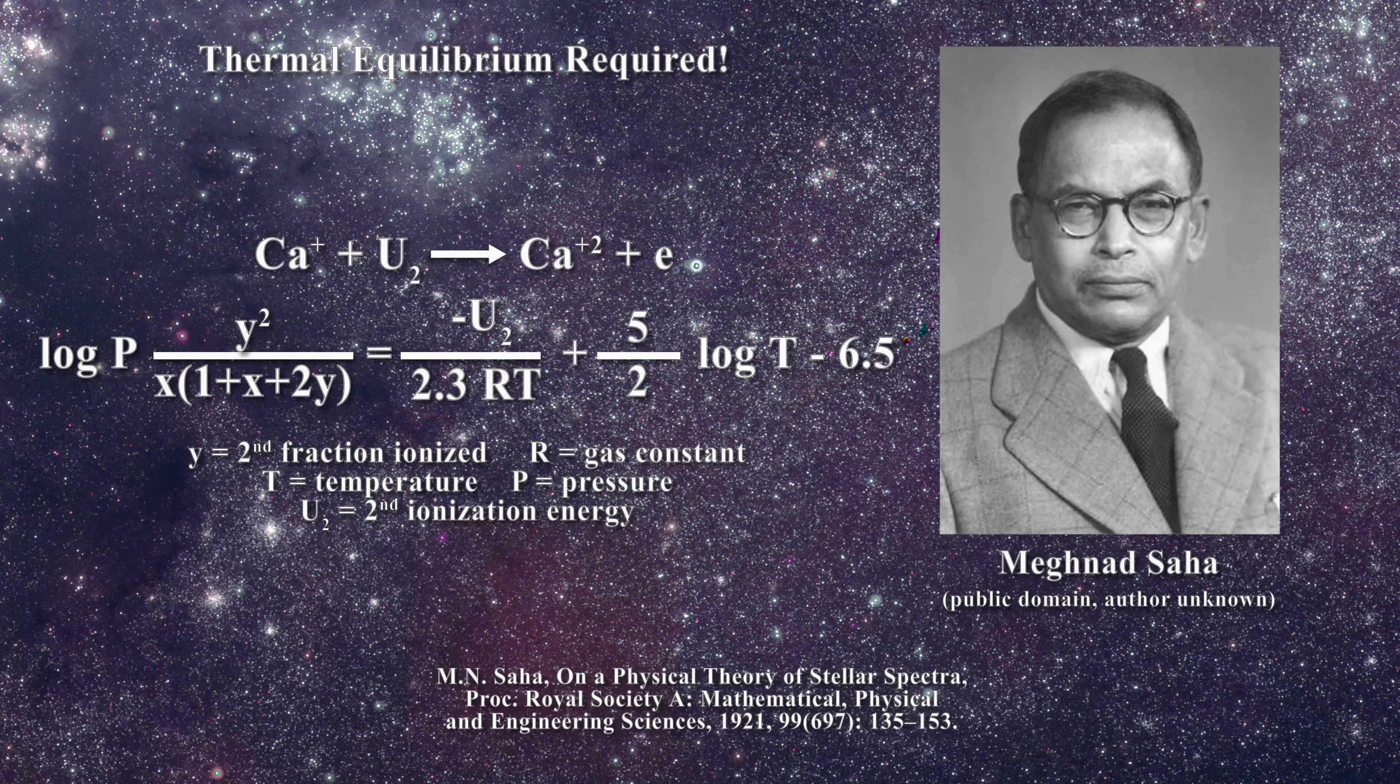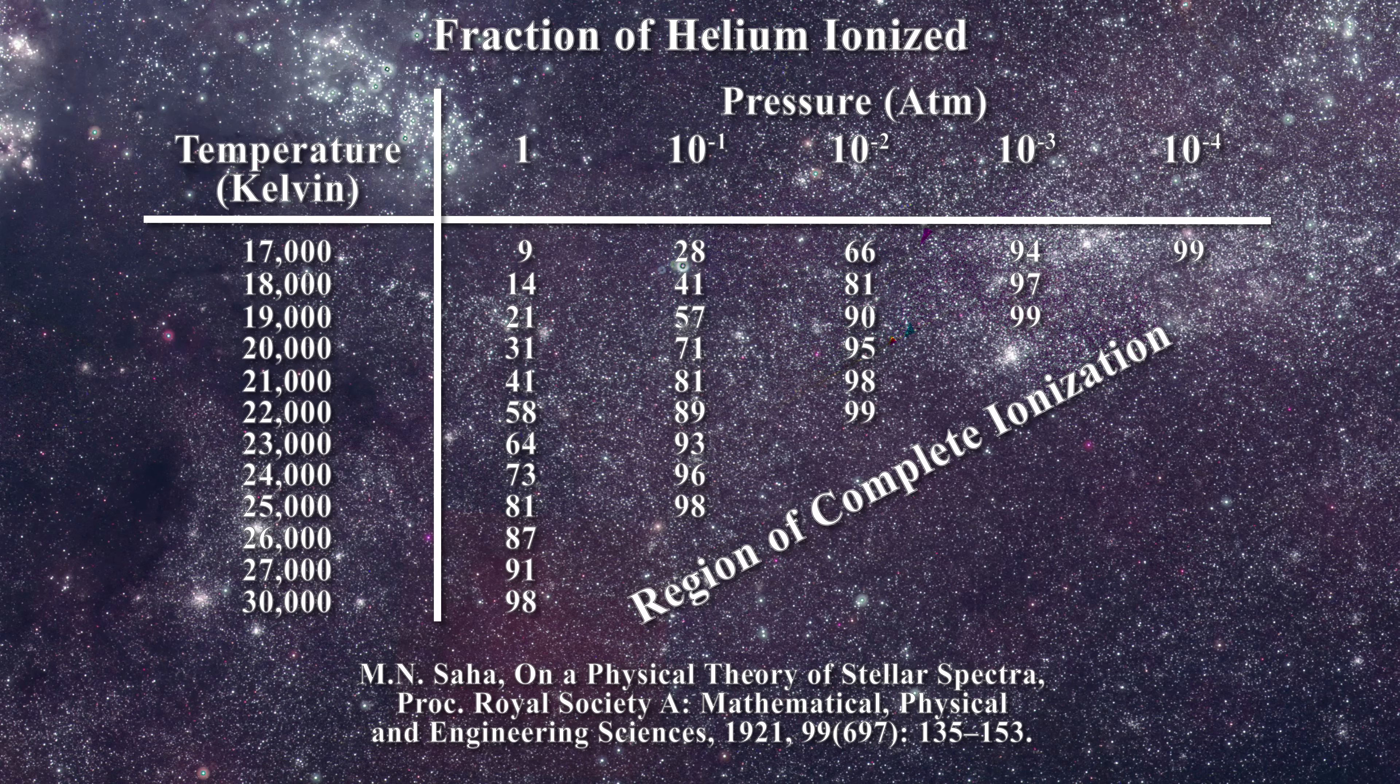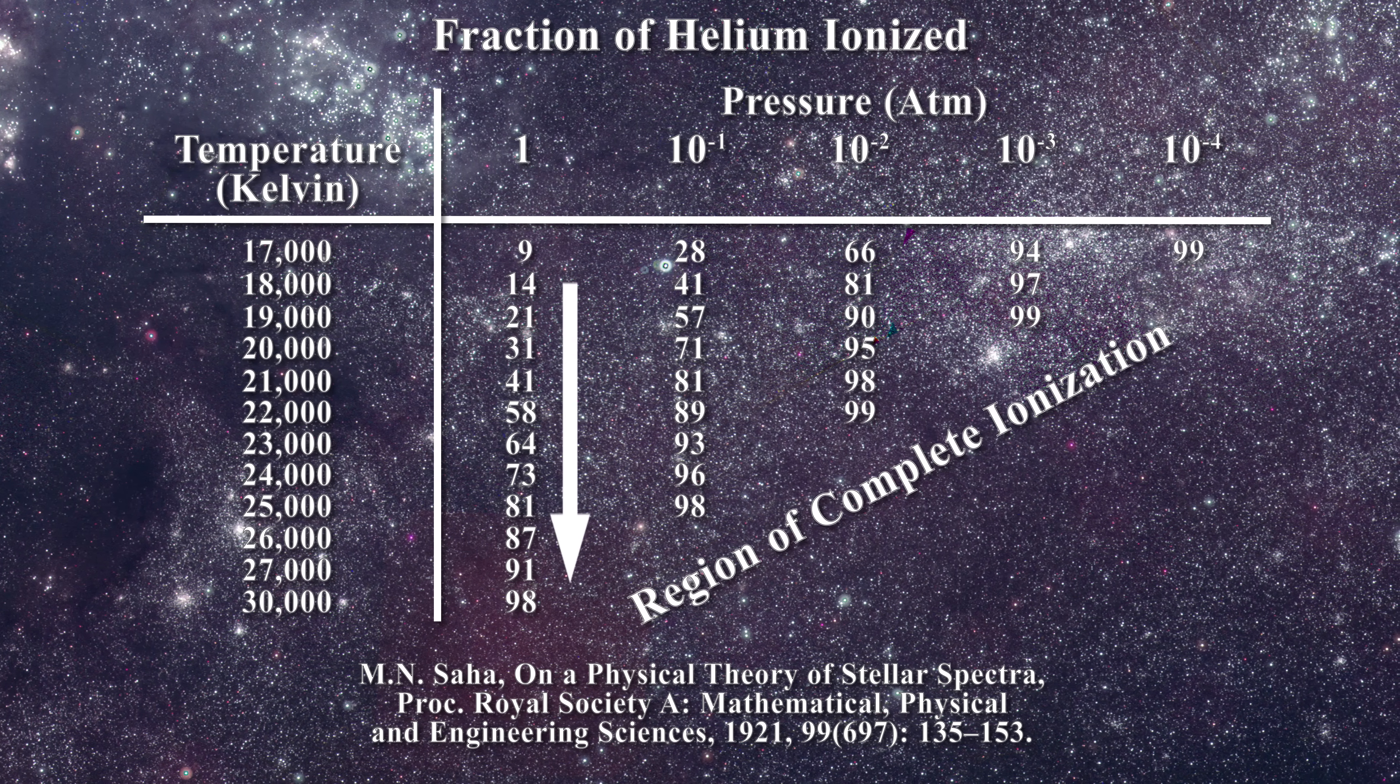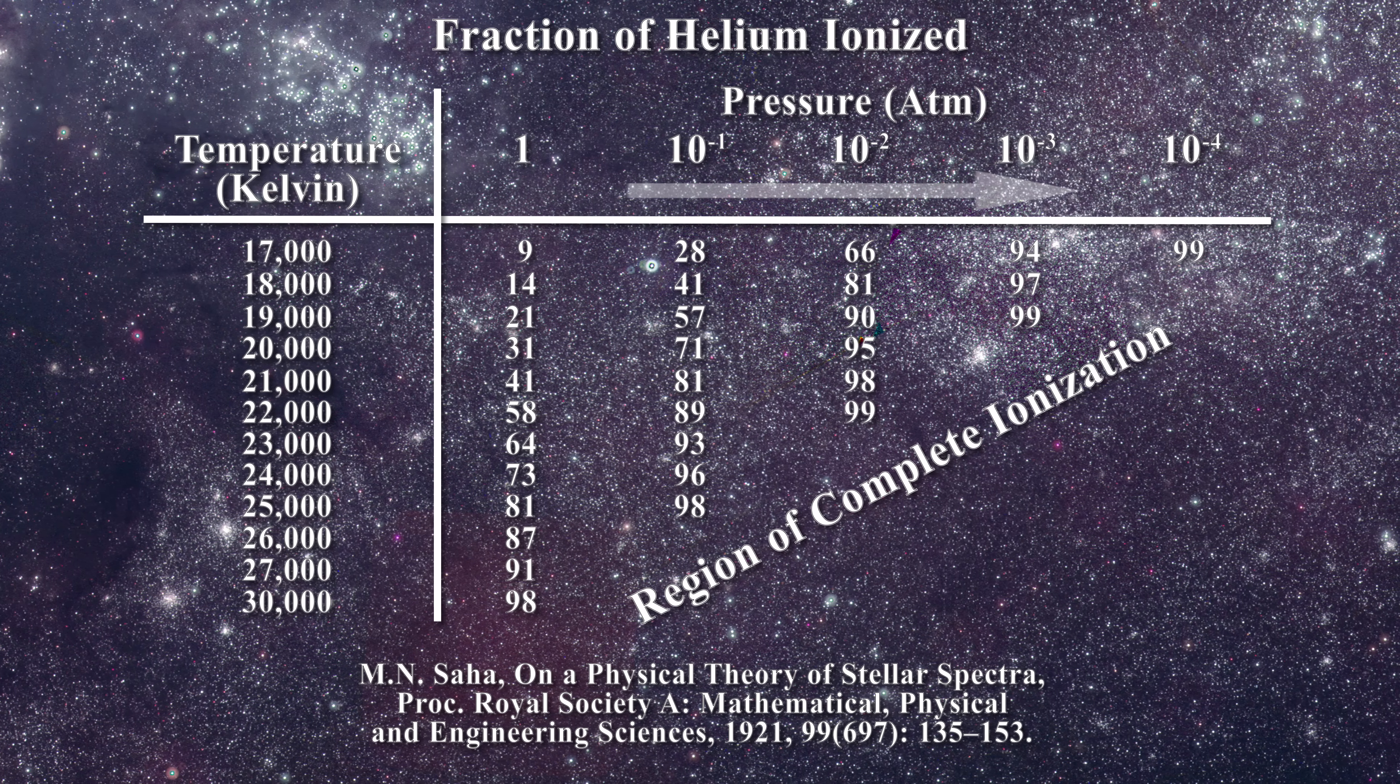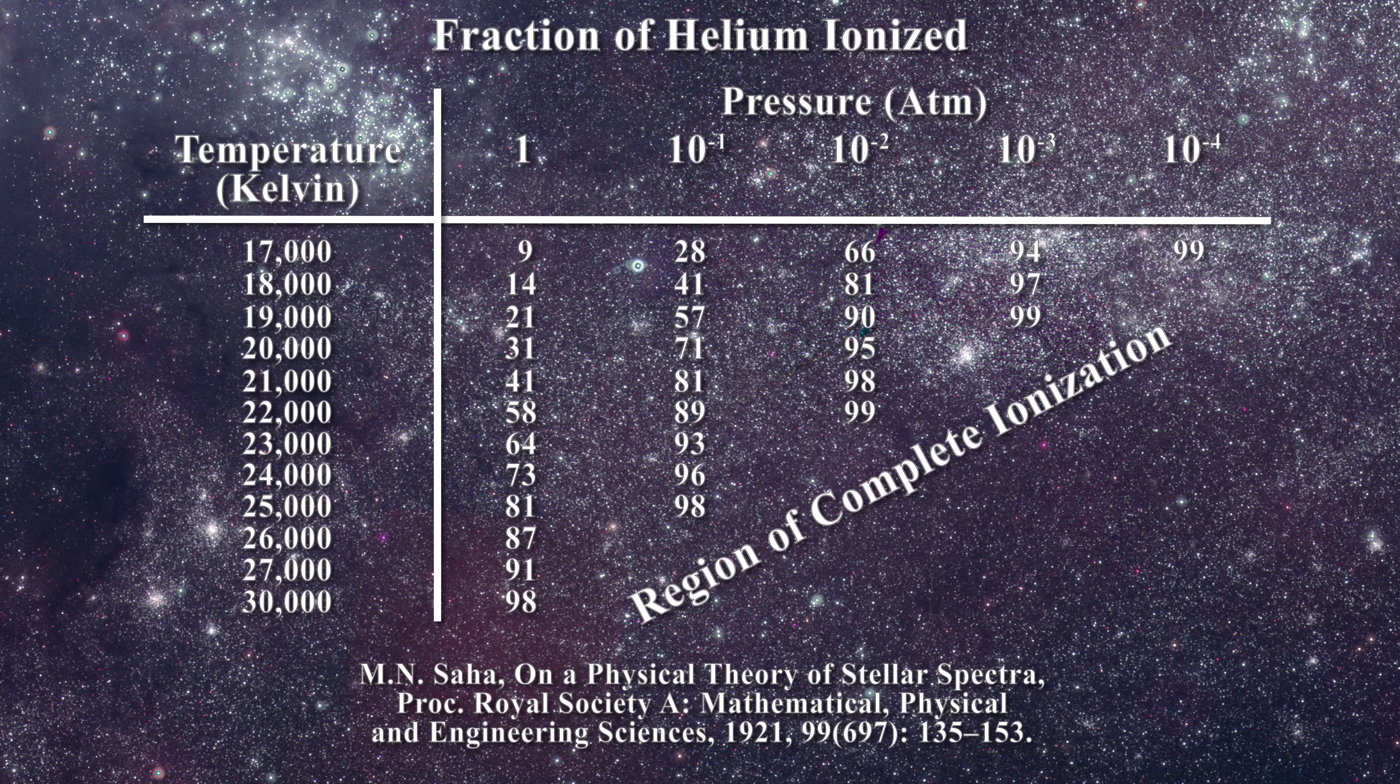In his second paper Saha presented this table for the first step ionization of helium. One immediately sees that the ionization increases with temperature. Ionization is also favored by lower pressures. As a result if temperature was known then clearly the pressure could be established by noting the extent of ionization.